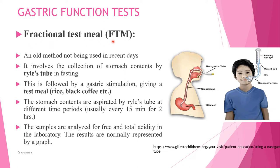Now let us see the gastric function tests. The first is the Fractional Test Meal (FTM) — a very old method no longer used in recent days. It involves collection of stomach contents via a Ryle's tube during fasting, followed by a gastric stimulus such as a test meal of rice or black coffee. The stomach contents are then aspirated at different time intervals, usually 15 minutes apart, for two hours.